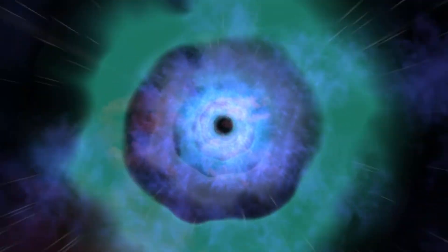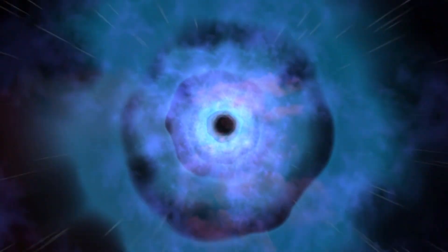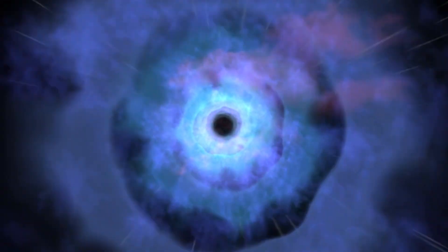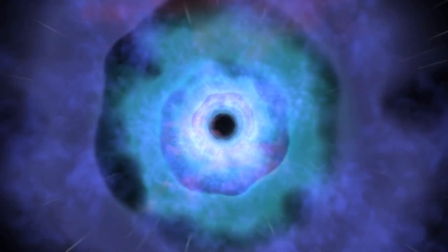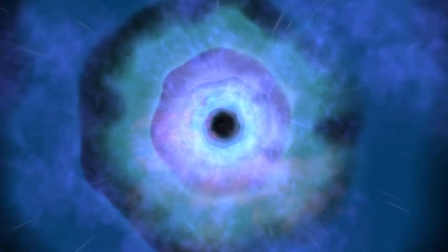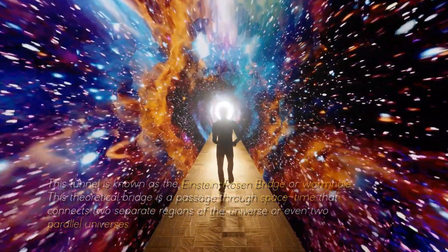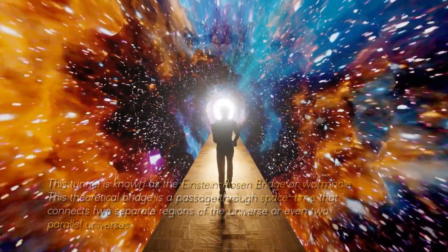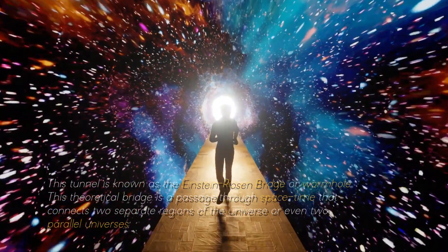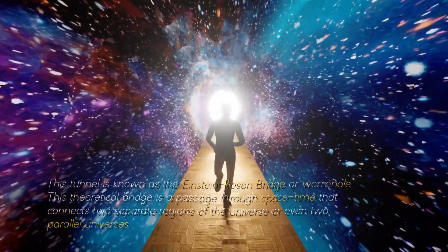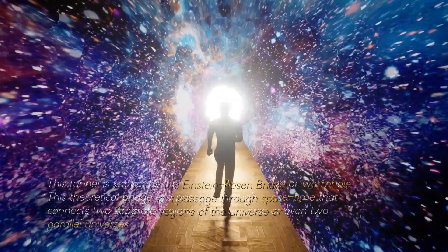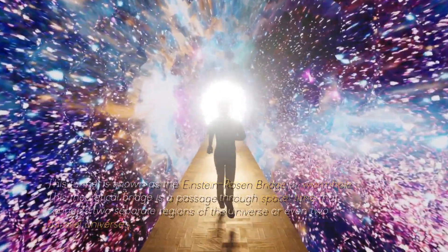The idea is that instead of being crushed by falling into a black hole, one would be sucked through a tunnel through the ring of fire and emerge through a white hole somewhere else in a parallel universe. This tunnel is known as the Einstein-Rosen Bridge, or wormhole. This theoretical bridge is a passage through space-time that connects two separate regions of the universe or even two parallel universes.